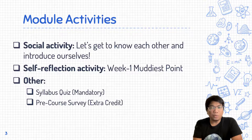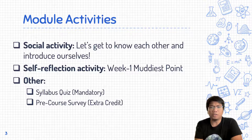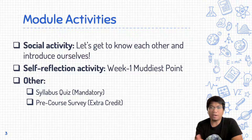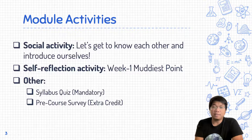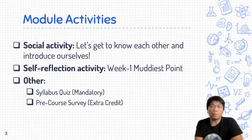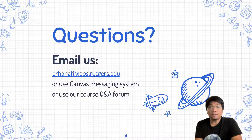Besides those two activities, we also have a couple of others. The first is the syllabus quiz, which is mandatory — you need to complete it in order to continue with the second module. It's a very easy quiz; you can finish it within five minutes as long as you've read the syllabus. The second is the pre-course survey, which will count as part of the extra credit opportunities throughout the semester.